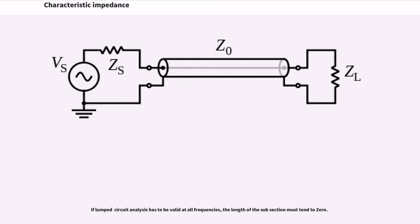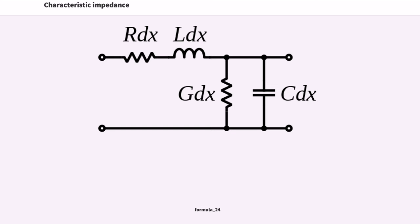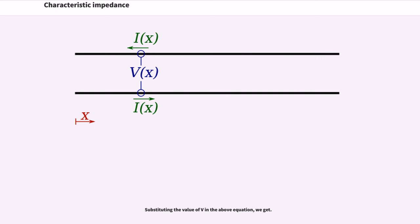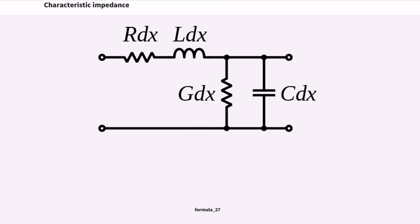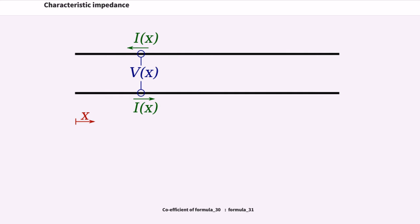If lumped circuit analysis has to be valid at all frequencies, the length of the subsection must tend to zero. Formula 24 and Formula 25 are obtained. Substituting the value of V in the above equation, we get Formula 26 and Formula 27.